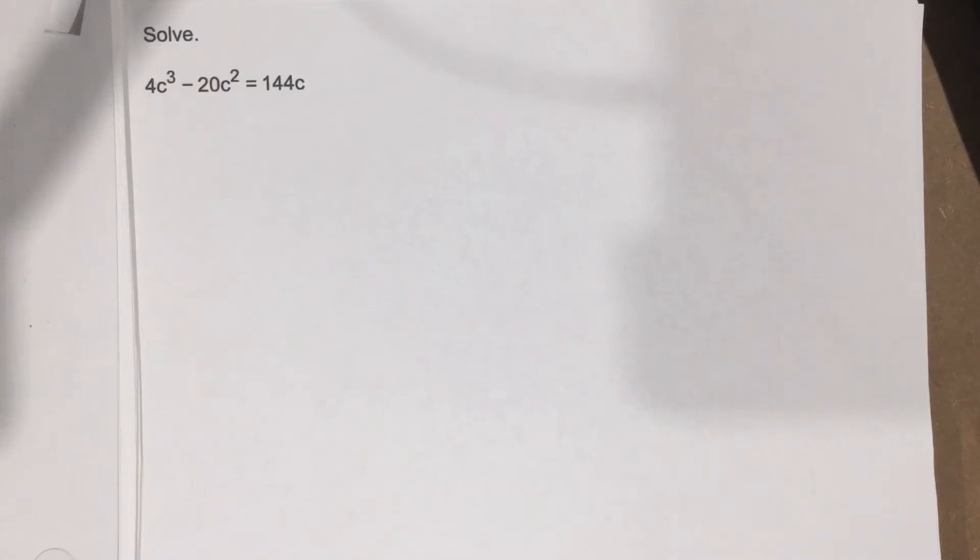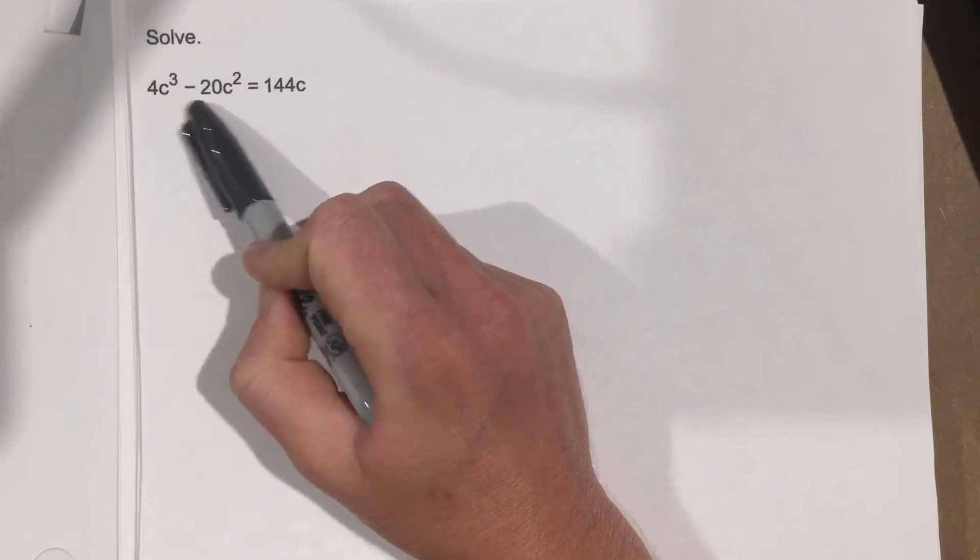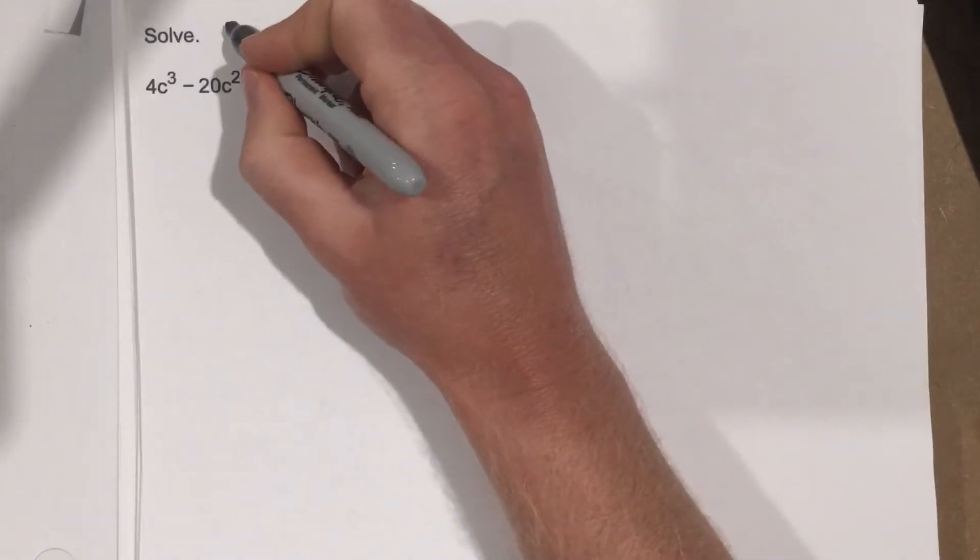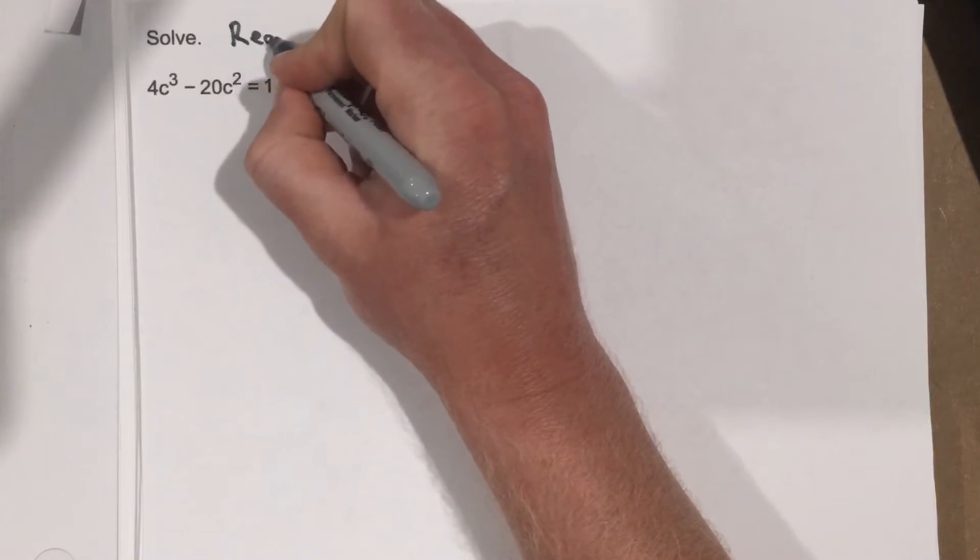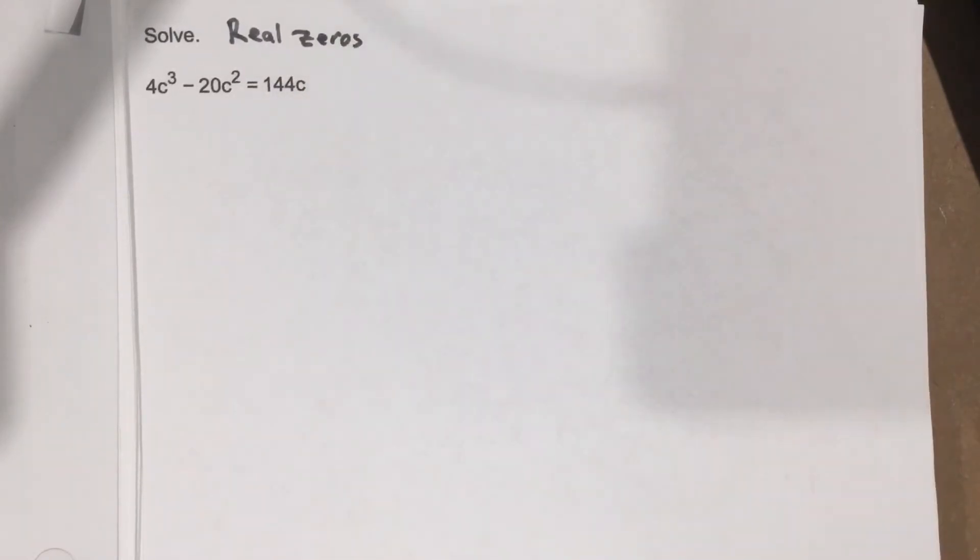This is problem number 7 from section 4.4, and in this problem it says solve this polynomial. Now I want to be clear that when we solve this, right now we're only looking for the real zeros. So anything that's complex we're just going to ignore for now.